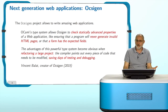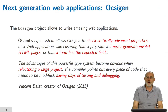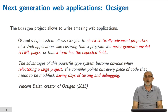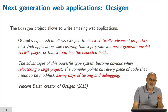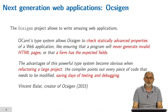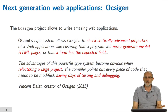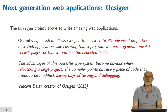You also have next-generation web applications like the Ocsigen framework. Vincent Balat, the creator of Ocsigen, considered that thanks to OCaml's type system, Ocsigen can do incredible things like statically checking — meaning at compile time — that a web application will never generate invalid HTML pages, or that a form really has the fields expected for the application to run. He also thinks the type system is extremely powerful for refactoring a large project. When you need to change the data definition, the compiler points out every piece of code that needs to be modified. For them, this is life-saving — it saves days of testing and debugging.